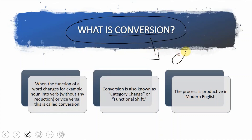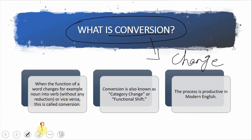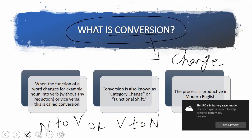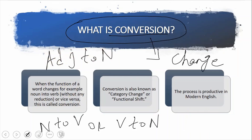Conversion کے meaning سے ہی — to change۔ ٹھیک ہے۔ اور اب اس کی definition دیکھتے ہیں word formation میں۔ Definition یہ ہے کہ when the function of a word changes — for example noun into verb or verb into noun — without any addition or reduction, this is called conversion. یعنی noun verb میں change ہو جائے یا verb noun میں، یا adjective as a noun use ہو جائے یا adjective as an adverb use ہو جائے، تو یہ ساری چیزیں conversion میں آئیں گی۔